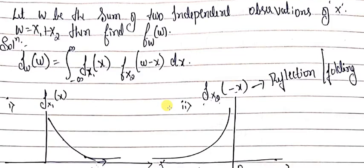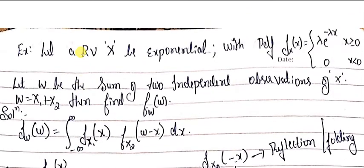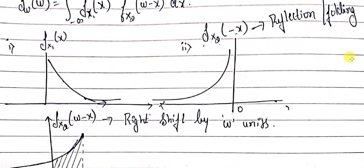The first pdf is fx1(x) = lambda times e to the power minus lambda x, valid for x greater than or equal to zero and zero for x less than zero. In this plot, below zero there is no value; above zero there is an exponentially decaying curve with a peak value of lambda at x = 0, decreasing as x increases.